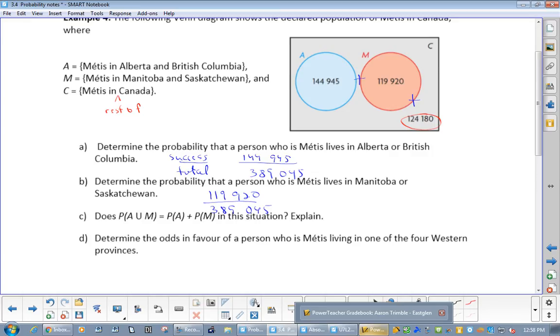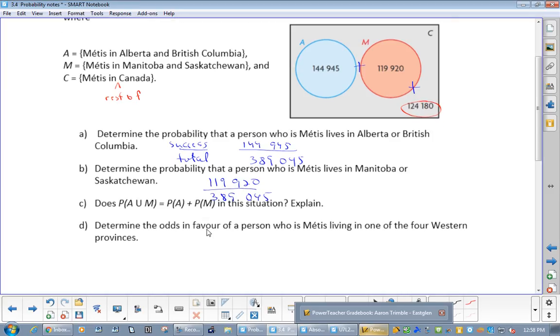Does P of A or M equal probability of A plus the probability of M in this situation? So what I'm saying is, if you added these together, you would get probability of A and M. Are you allowed to use this formula? Yes. Some people are like, have no idea. Why? Because they're mutually exclusive. Yes. Because they are mutually exclusive.